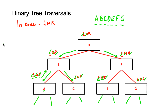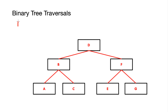Moving on to a post-order traversal. The root node here should come at the end of the traversal. We've seen that in pre-order the node comes first, in in-order the root node comes in the middle, and in post-order the root node will come at the end of the traversed list. The rules are left, right, and node.